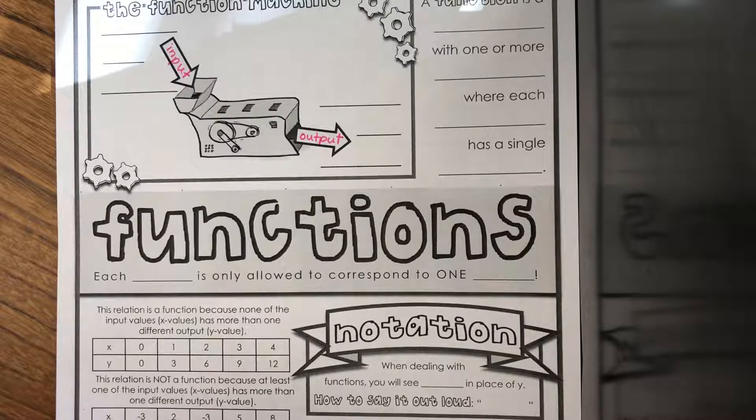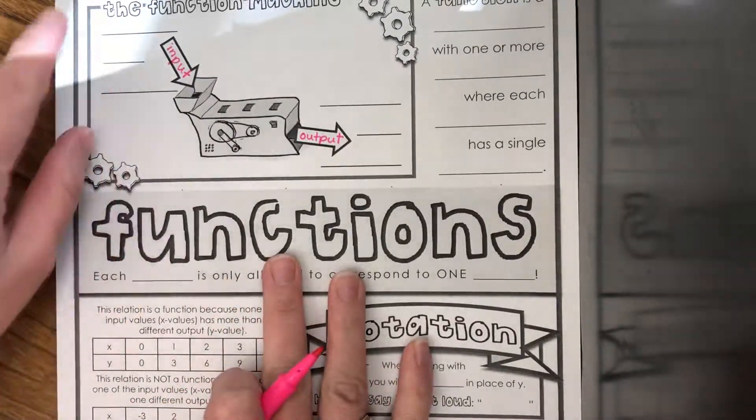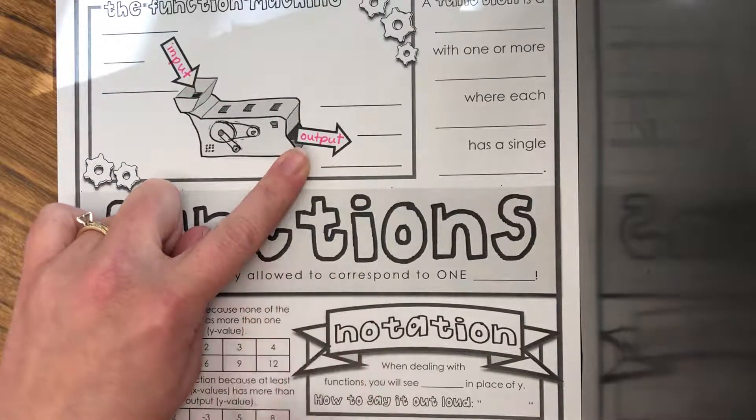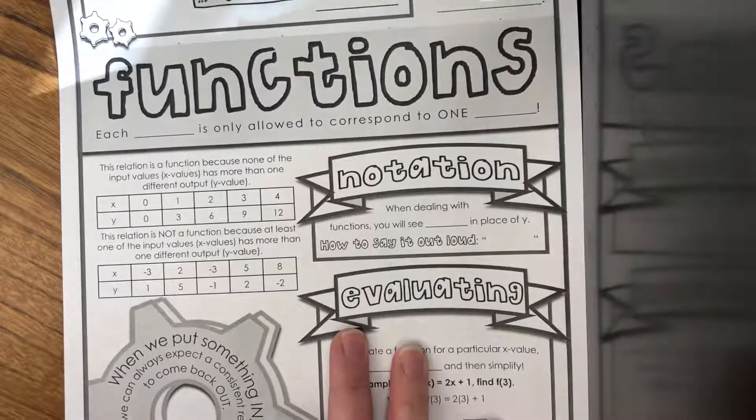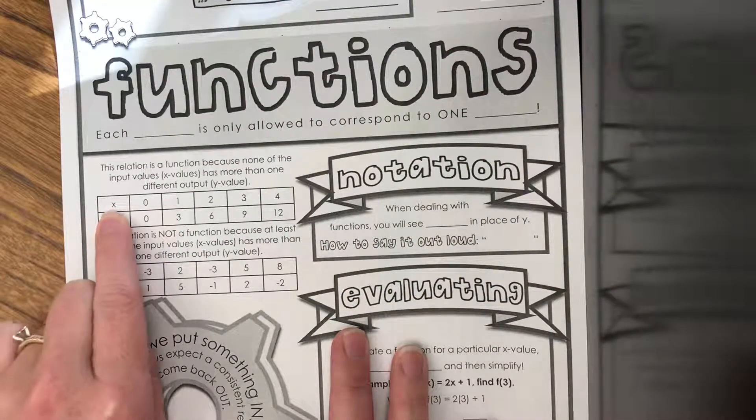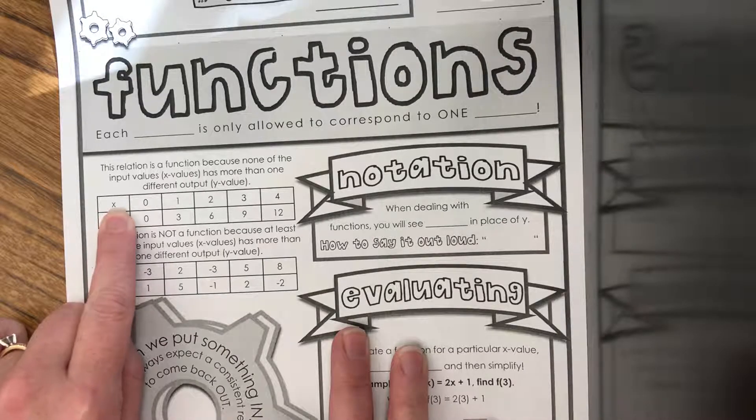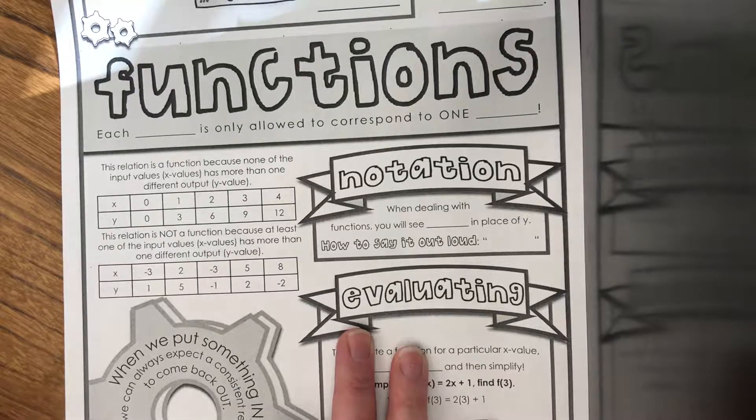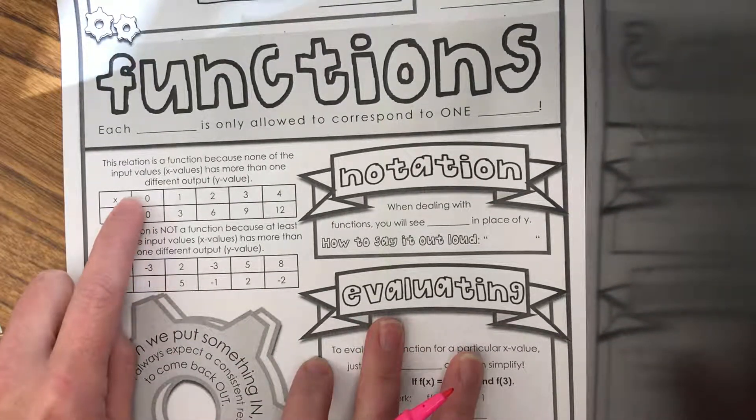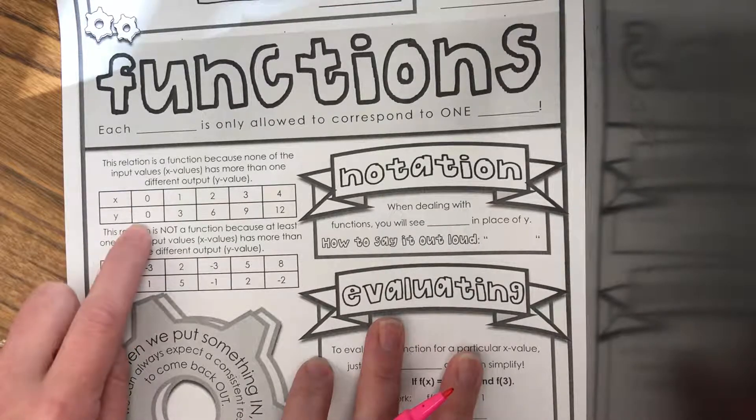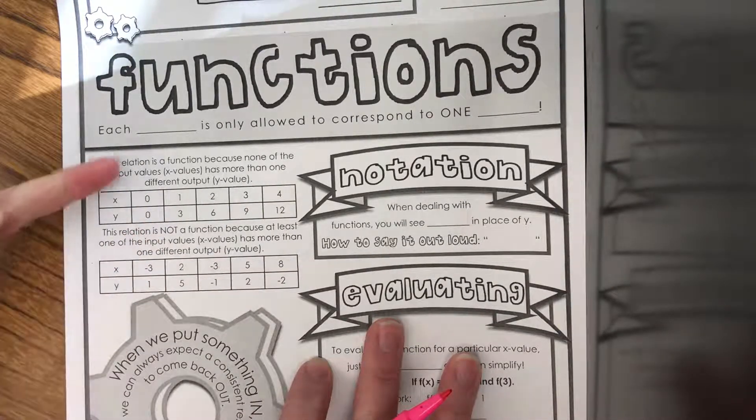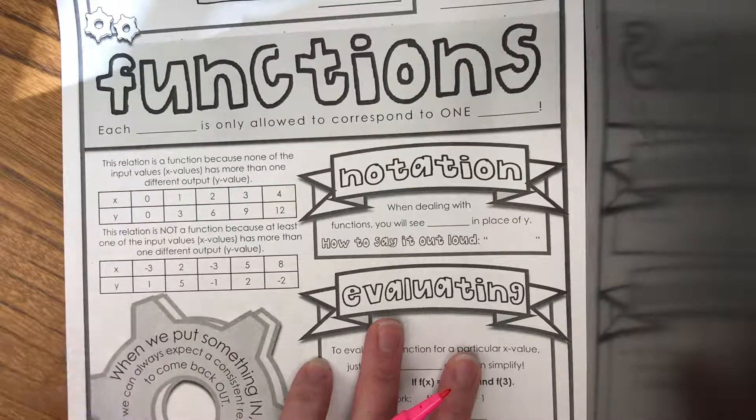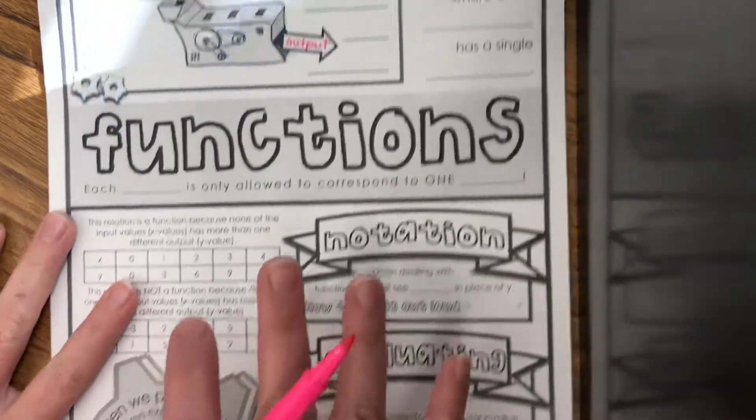Basically in math, relating this to a function as a mathematical term, for every input there can only be one output. So if we look at these tables, X represents input. That means for every X value there can only be one output. So every time there is a zero, I better be getting out a zero. When the input is zero X, the output is zero.